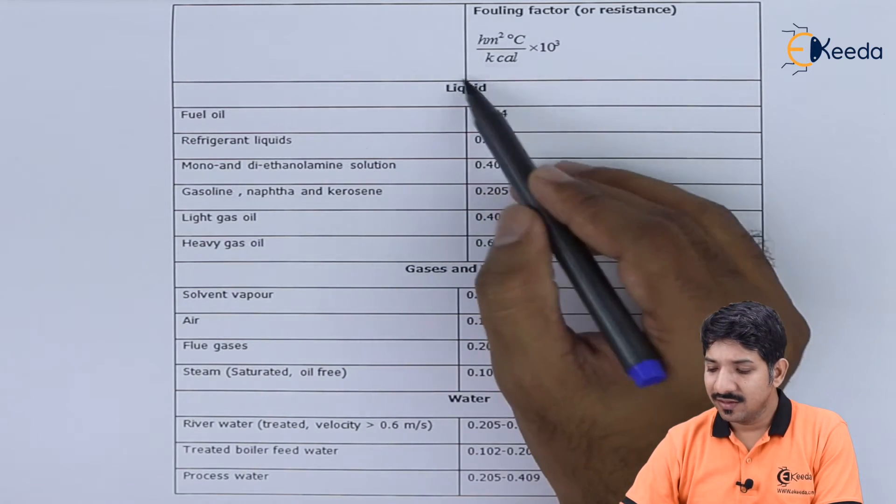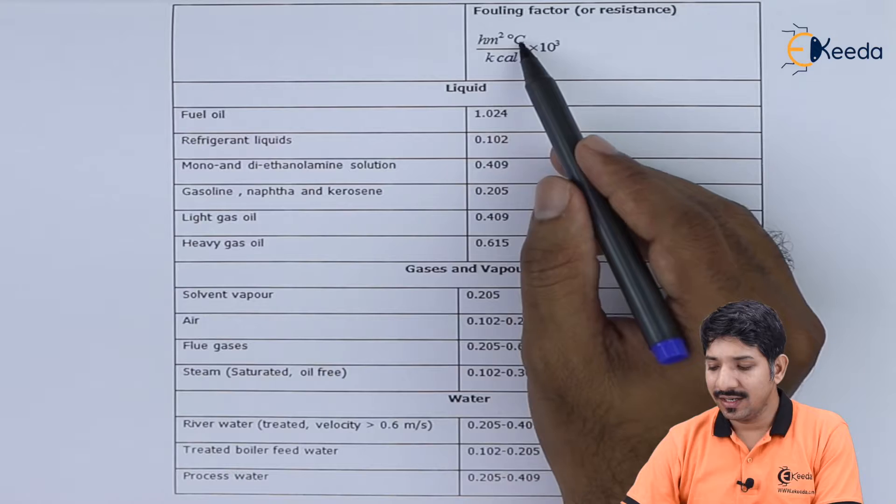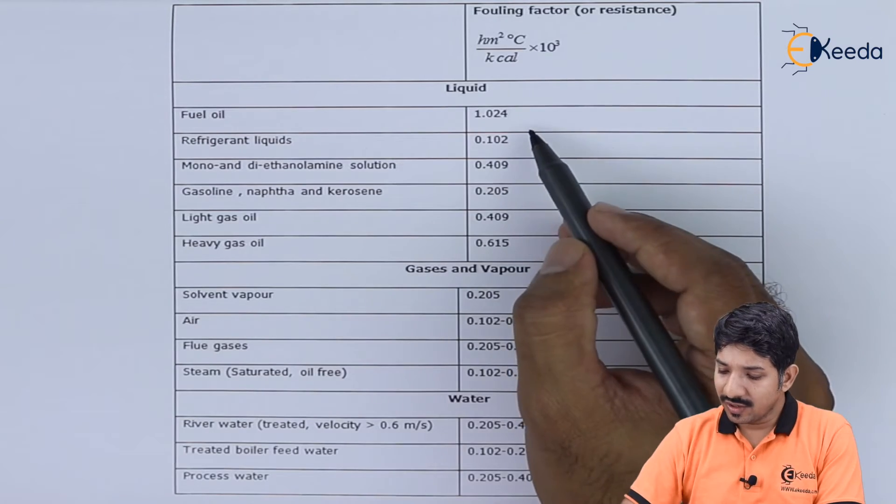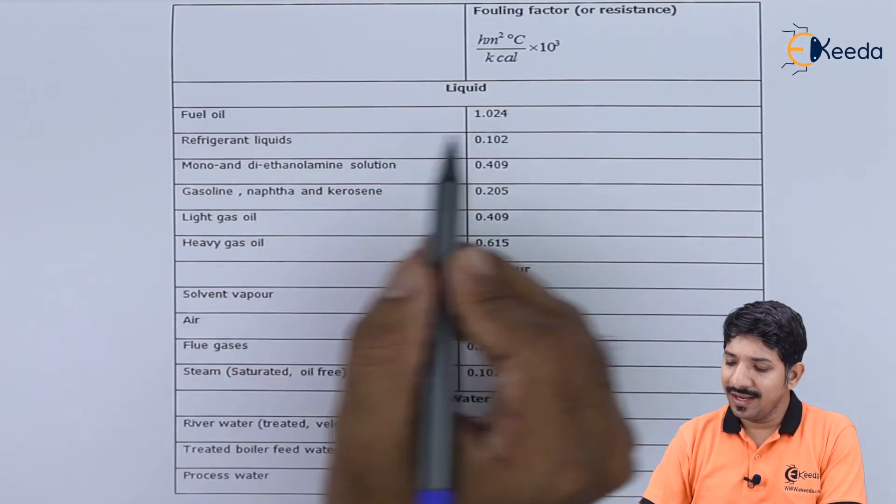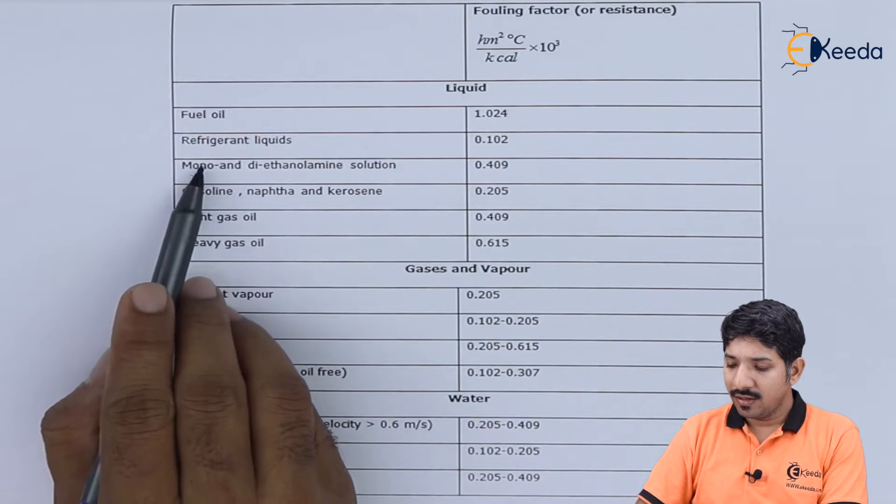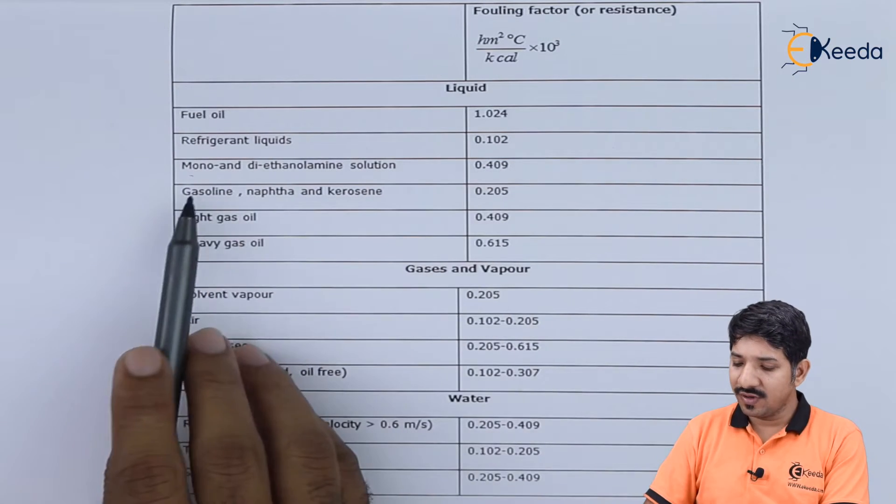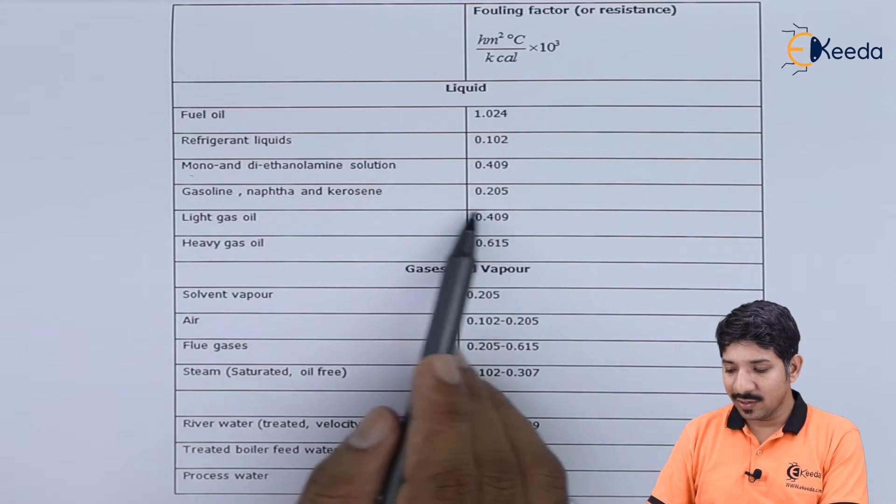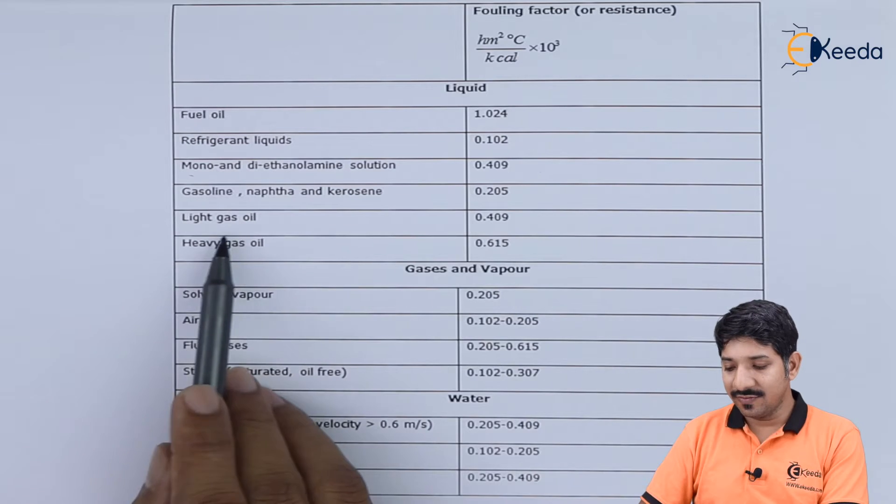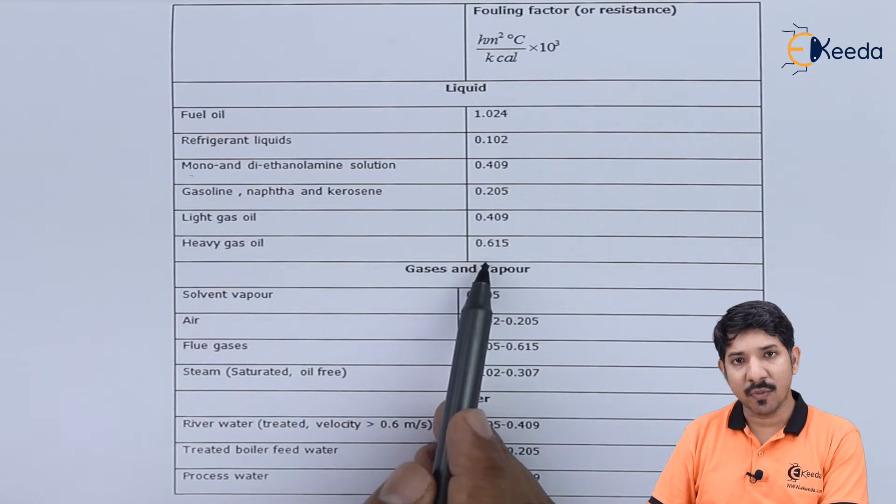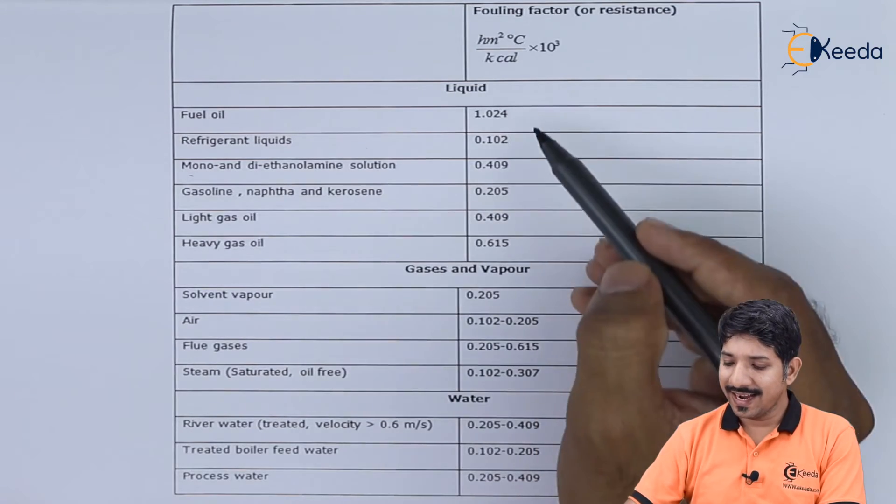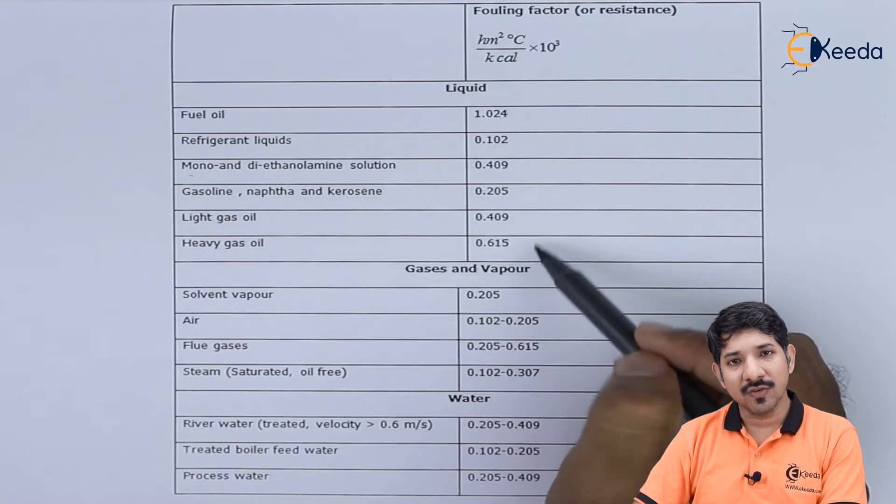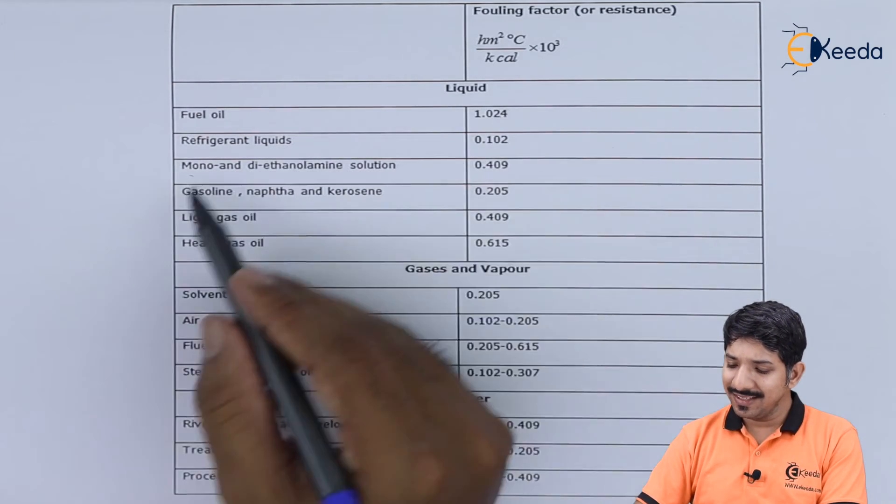This is given for understanding the quantity of the fouling factor. The unit is hour × meter squared × degree Celsius per kilocalorie. For fuel oil it is 1.024, for refrigerant liquid about 0.1, diethanol solution 0.4, gasoline or kerosene 0.2, liquid gas oil 0.4, and heavy gas oil 0.6. Only for fuel oil it is more than 1; for the rest it varies from 0.1 to 0.6.